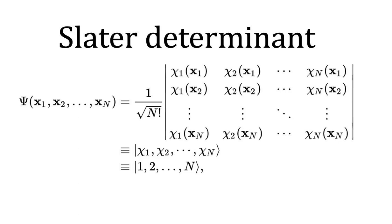It satisfies anti-symmetry requirements, and consequently the Pauli principle, by changing sign upon exchange of two electrons, or other fermions.